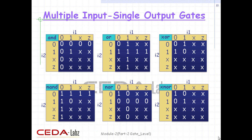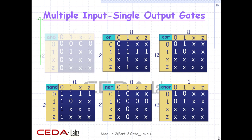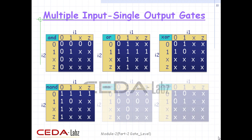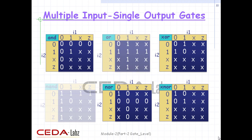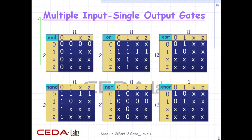The truth tables for these gates define how outputs are computed from the inputs. Truth tables are defined assuming two inputs. Outputs of gates with more than two inputs are computed by applying the truth table iteratively.